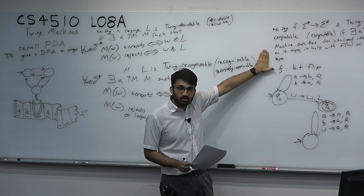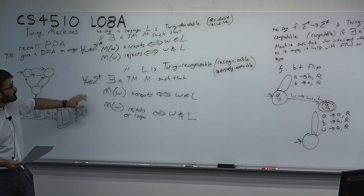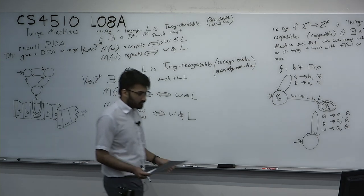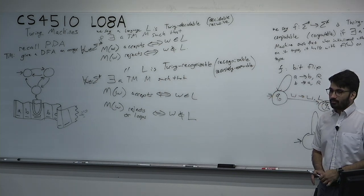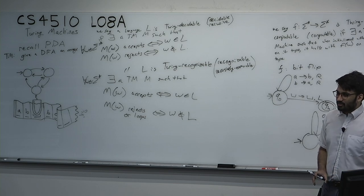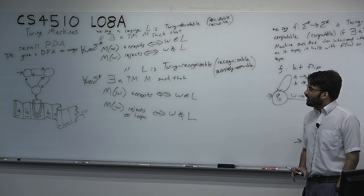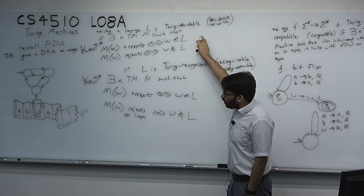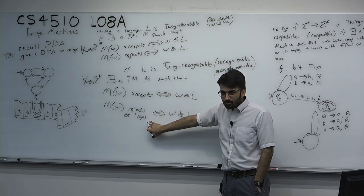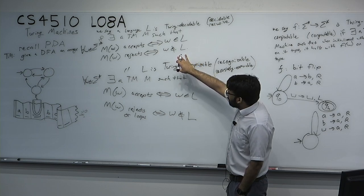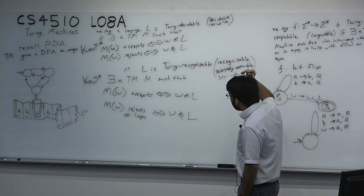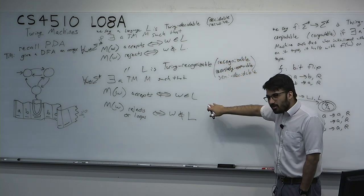Every decidable language is recognizable — if a machine accepts and rejects always halting, it's certainly a recognizer. These recognizable languages are also sometimes called semi-decidable. Every decider is a recognizer. But is every recognizer a decider? Suppose we have a language which has a recognizer — maybe it loops on some inputs. Does there exist a different equivalent machine which halts on all inputs? This is a very complicated question that will take us a week to answer. Let's take our break and come back to talk about the importance of the Turing machine.